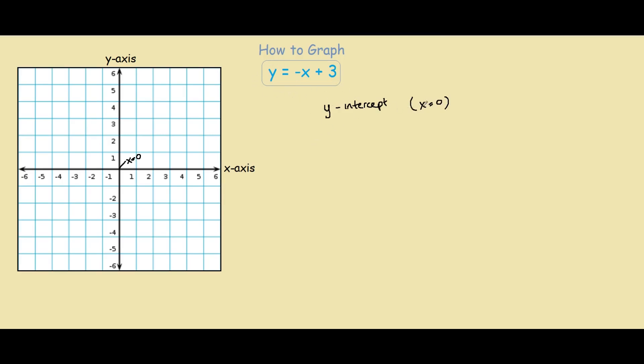We substitute x equals 0, we get y equals negative 0 plus 3, therefore y equals 3. So one of our points is at (0, 3). On the graph, this would be 0, 3, here.